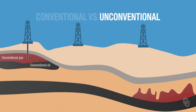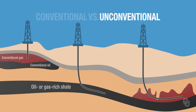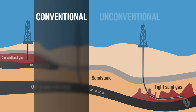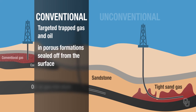Unconventional production usually employs horizontal or directional drilling techniques in impermeable formations, such as shale or tight sandstones. Conventional approaches targeted trapped gas and oil in porous formations sealed off from the surface.